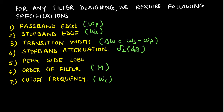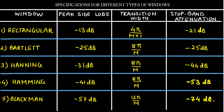Let us look at the specifications for the particular windows considered: rectangular, Bartlett, Hanning, Hamming, and Blackman. For the rectangular window, the peak side lobe is −13 dB, the transition width is 4π/(M+1), and the stop band attenuation is −21 dB. For the Bartlett window, the peak side lobe is −25 dB, the transition width is 8π/M, and the stop band attenuation is −25 dB.